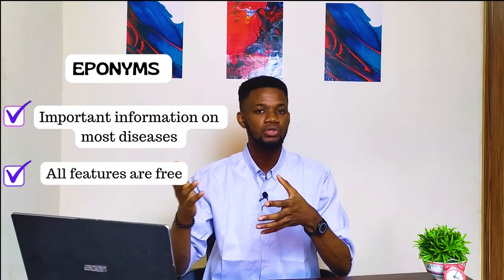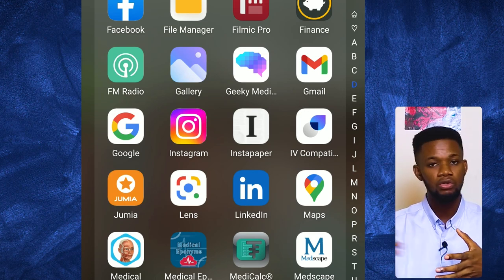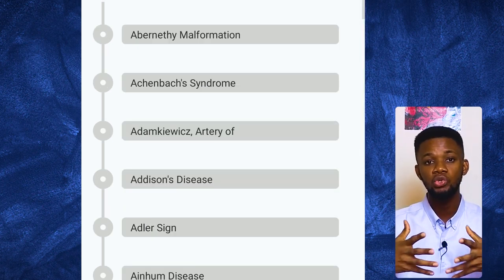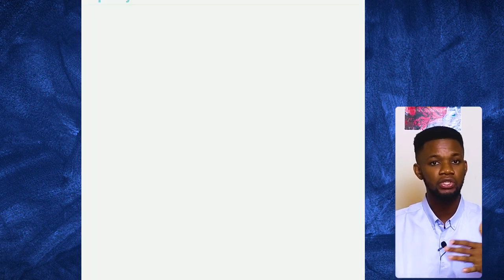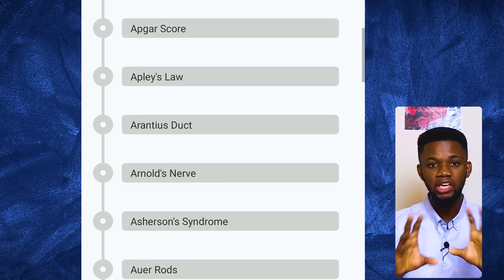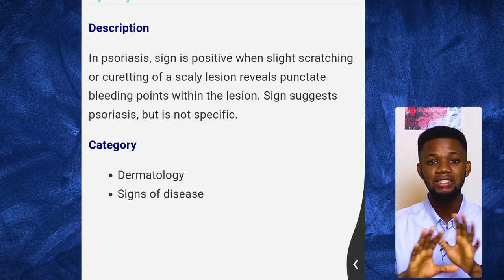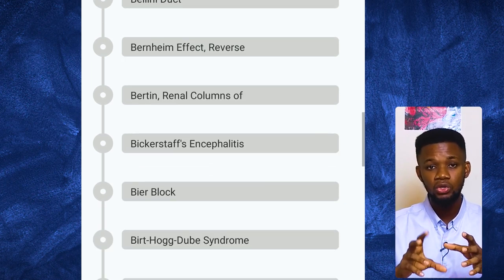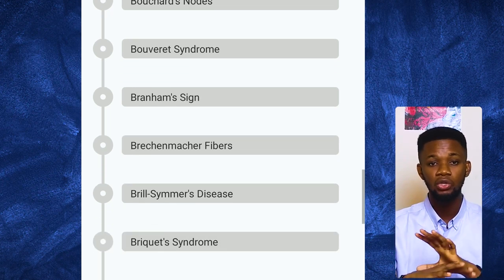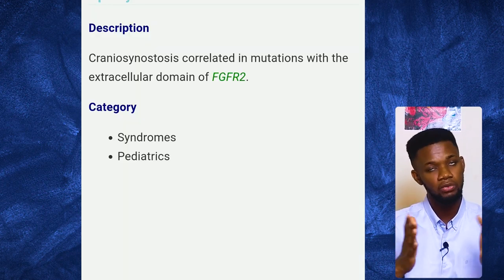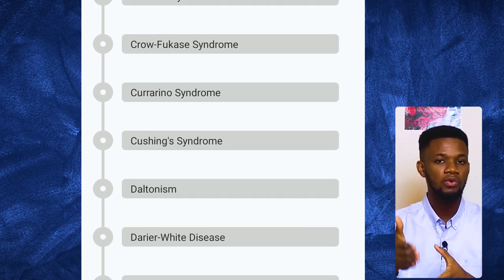Number four is Eponyms. We know what eponyms are — disease conditions named after people. We have a host of them: Down syndrome, Crouzon syndrome, Edwards syndrome. All through your medical education you'll find diseases named after persons. Beyond knowing the names, it's important to know what these conditions are, their pathophysiology, clinical features, and management. This application helps solve that problem accurately, giving you everything about all these conditions right on your handset. You can find it on the App Store and Play Store. It's absolutely free — no charges, no in-app purchases. You'll find almost any condition you can think of in the Eponyms app.